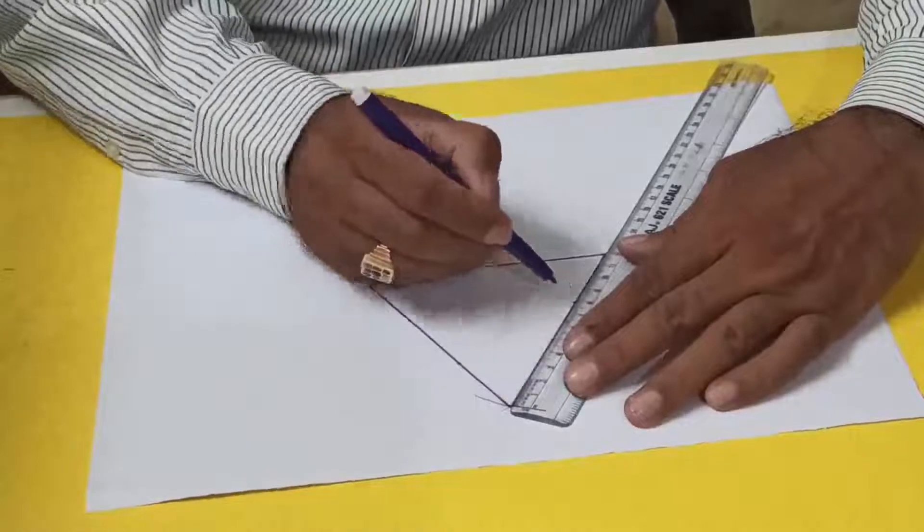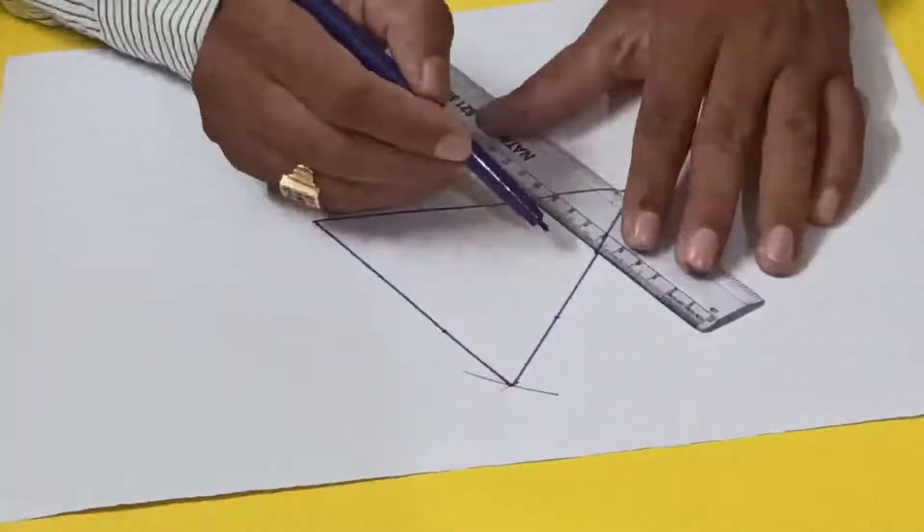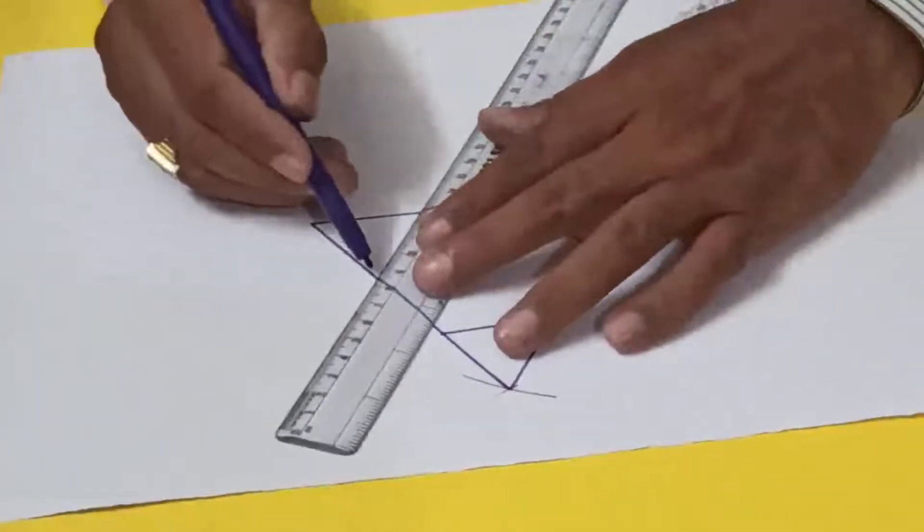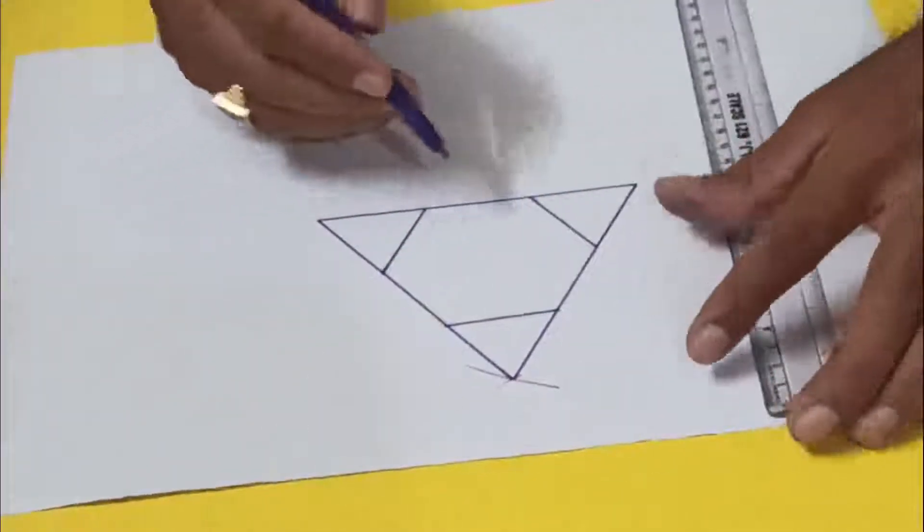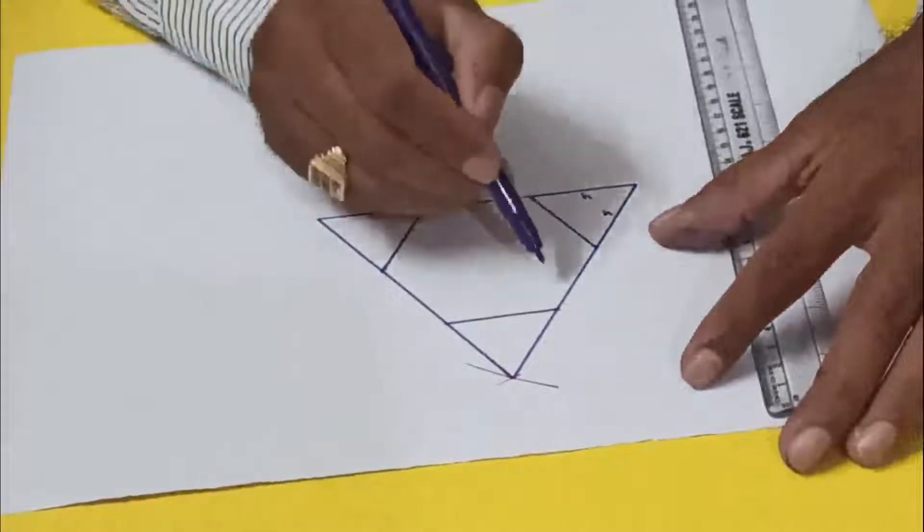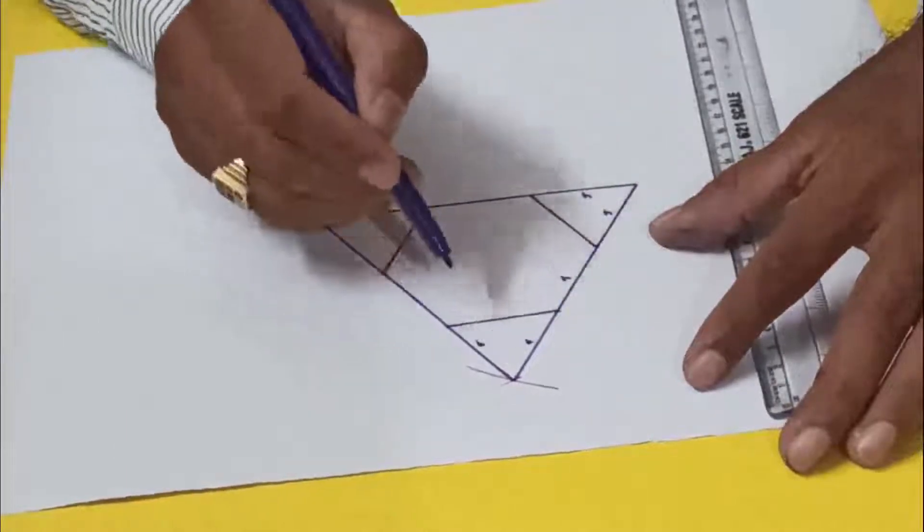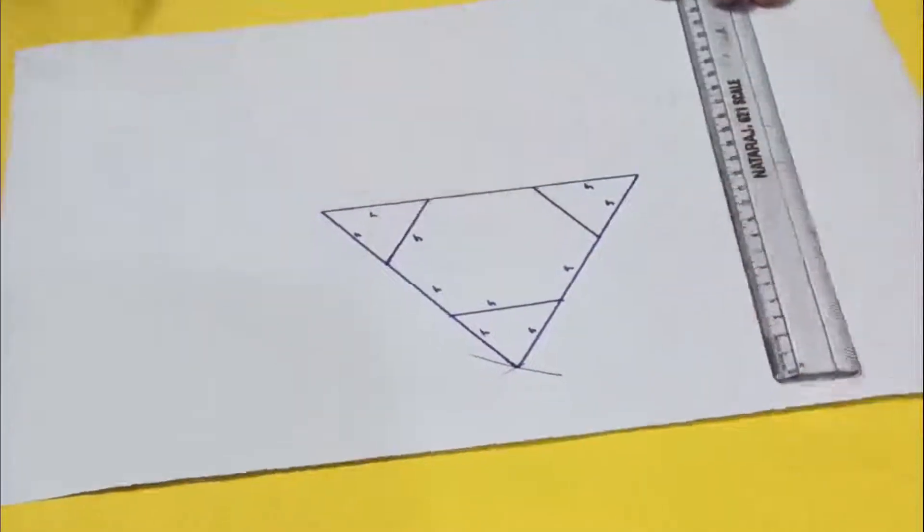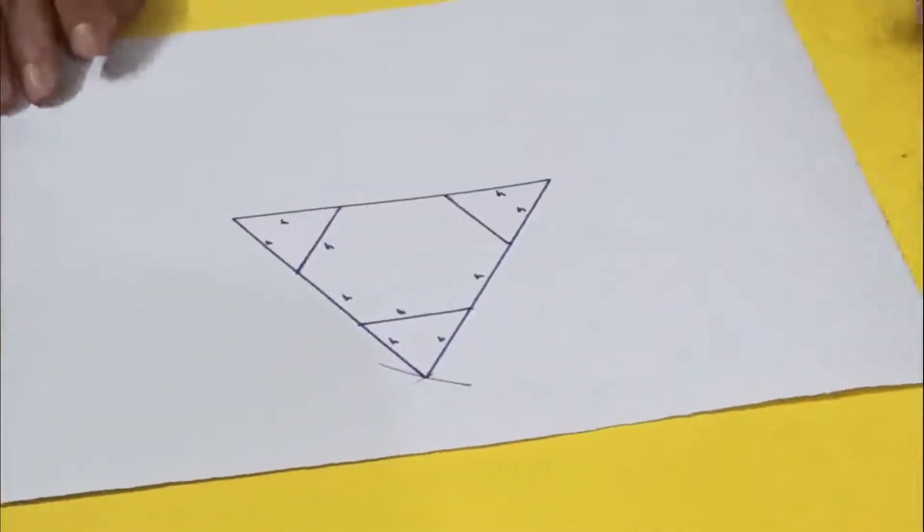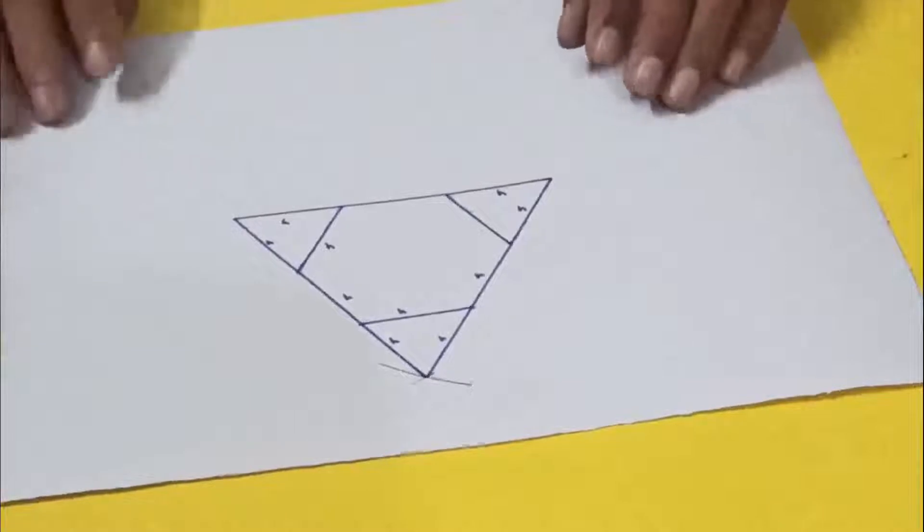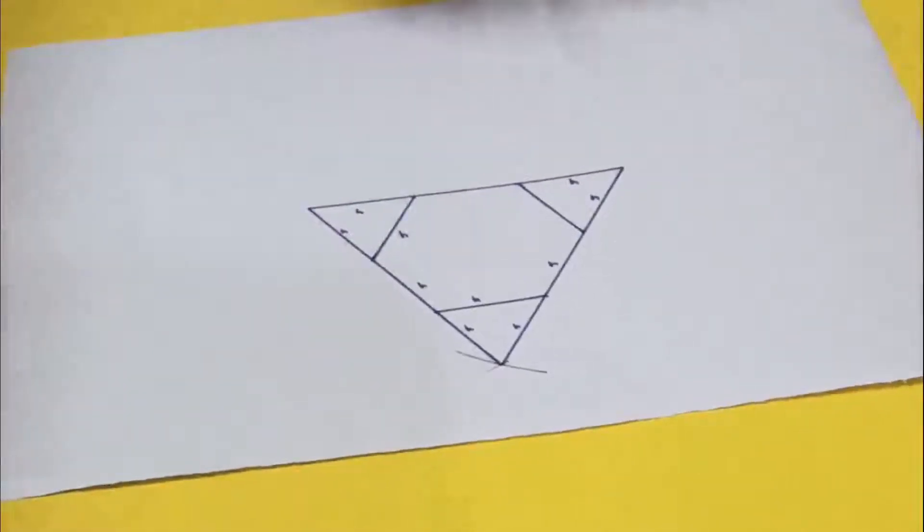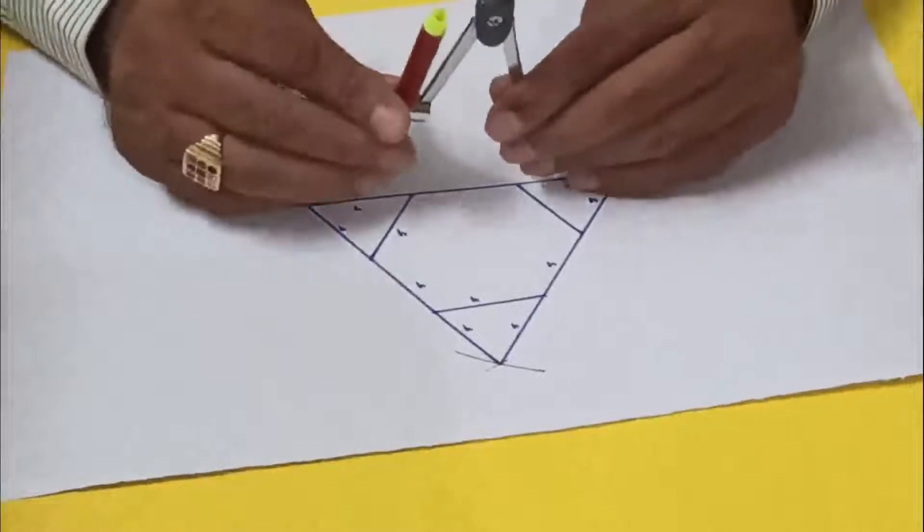I'll join this one four, four, four, four, four. This way. Out of four triangles, I have made already three. So now what I'll do, I'll take four centimeter side.